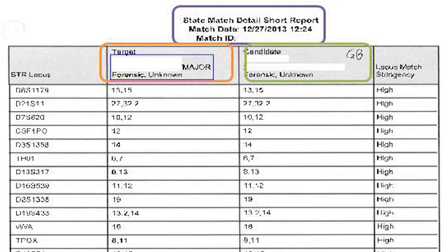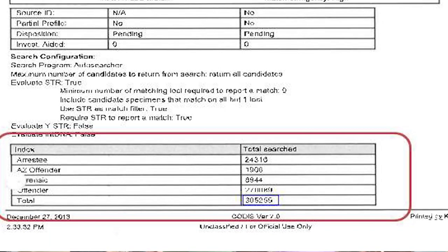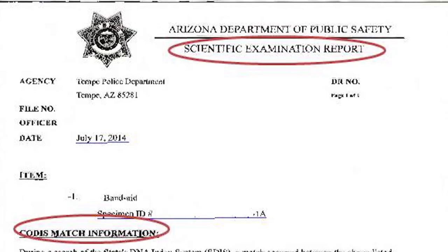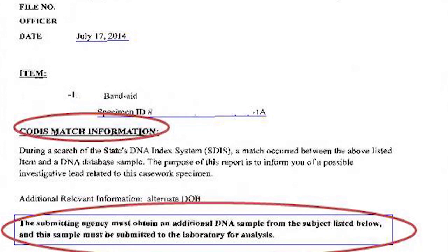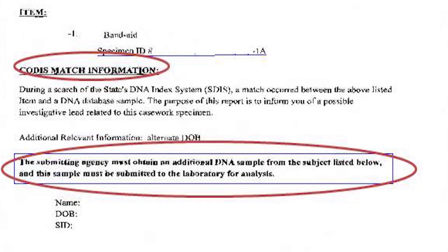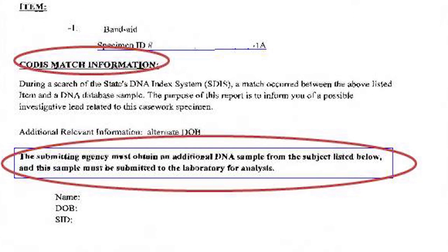I look at what their target was, what their candidate was. I look at how many it was run against. This was a local system in the Arizona database. I look at exactly how many arrestees it was searched against — how many people this target profile was searched against. This is the report that goes out to the investigating officers to investigate. This is an investigative lead report saying: we ran this sample, we got a hit, now you go out and get a clean sample.